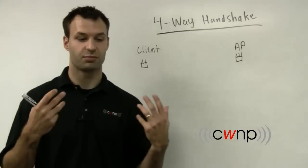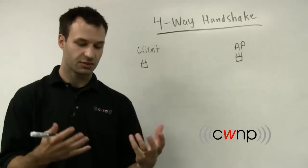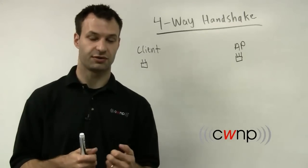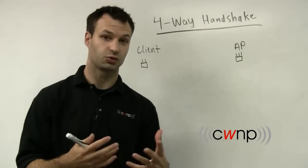The 4-Way Handshake is a process by which some source keying material is turned into data encryption material that can be used to encrypt actual data frames.